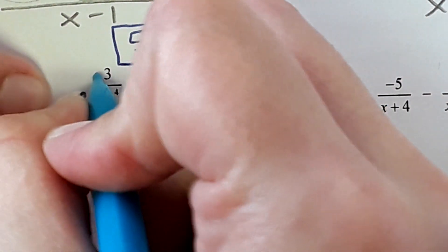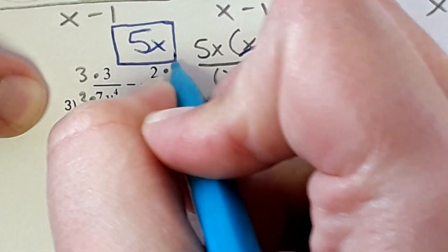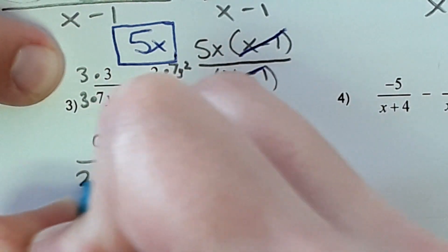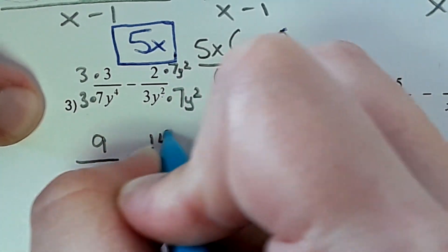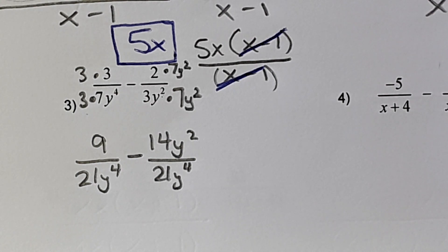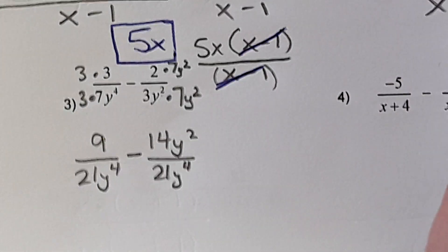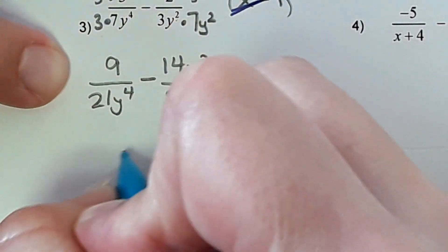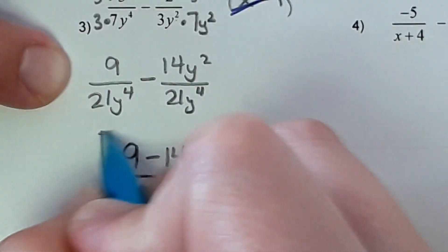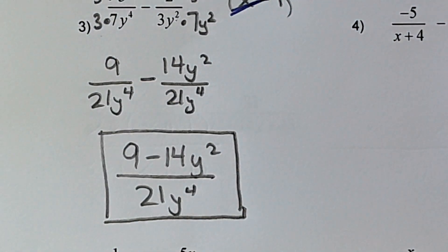But whatever I do to the bottom, I have to do to the top. So I'm also going to multiply this by 3 and this by 7y to the second power. So 3 times 3 is 9, so I get 9 over 21y⁴ minus 14y² over 21y⁴. And then the last step is just to put it all together: 9 minus 14y² over 21y⁴. And that's as much as I can do. I can't cancel out y's because of the subtraction. If it was all multiplication, then I could cancel factors out. But because of the subtraction, that's it.